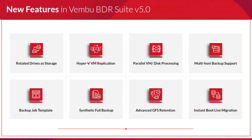New features in Rainbow BDR Suite version 5.0 include rotated drives as storage — a long-requested feature where you can rotate your drives at regular intervals so data is split and stored across them. Hyper-V VM replication has been newly introduced to replicate, failover, and undo failover your replicated Hyper-V virtual environment data. Parallel VM or disk processing allows you to back up multiple VMs concurrently within a single backup job.